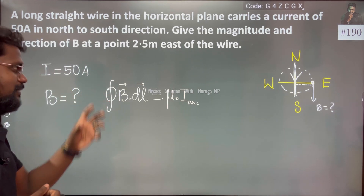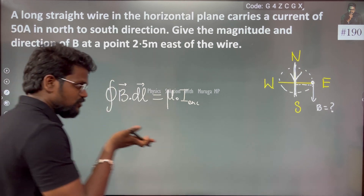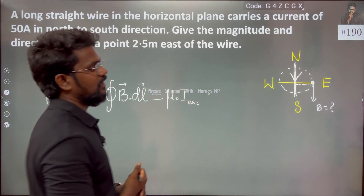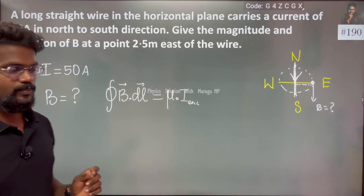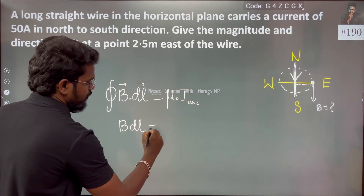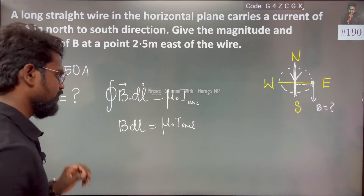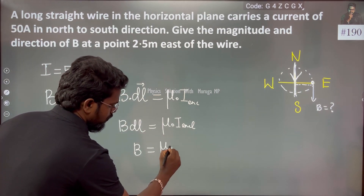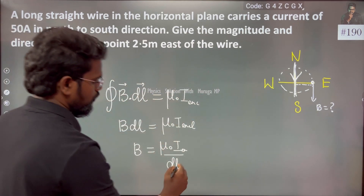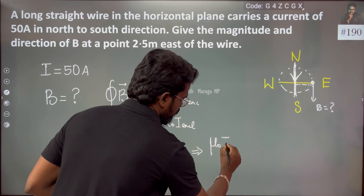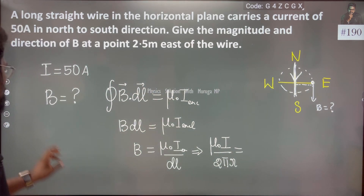Now we will talk about the magnetic field magnitude. Using Ampere's law: ∮B·dl cosθ = μ₀ × i enclosed. Since B and dl are in the same direction, the angle θ = 0, so ∮B·dl = μ₀ × i enclosed. Therefore B = μ₀ × i divided by the closed loop length dl, which equals 2πr.